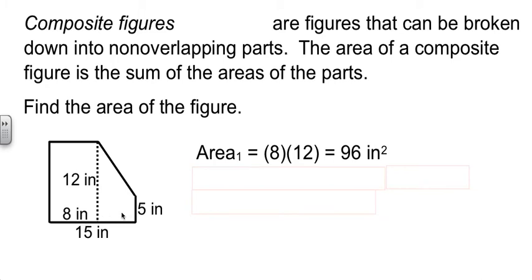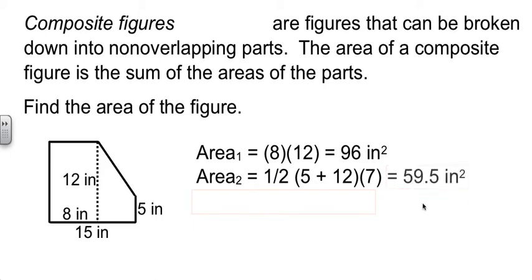One-half times five plus twelve times seven. Punching into my calculator, using parentheses carefully, I get the area of section two. And then add the two chunks together, and that's the total area.